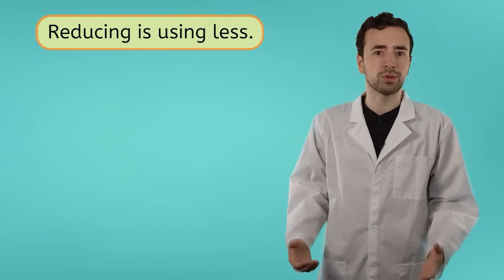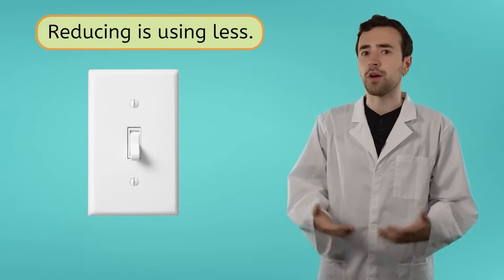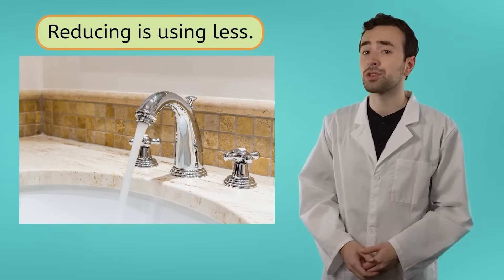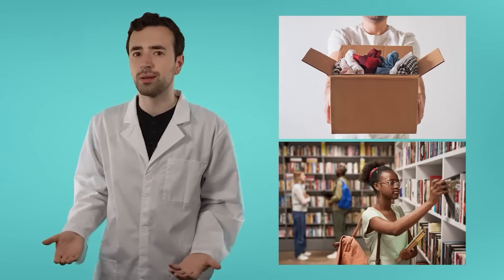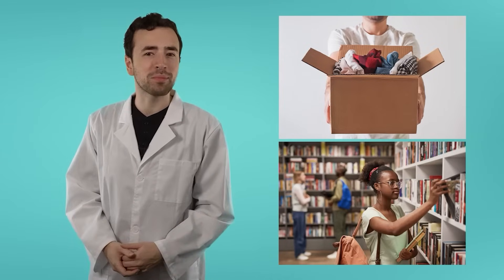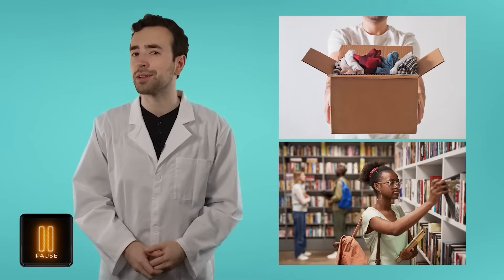Reducing can also look like just using less. Turning off the lights when leaving a room or turning off the water while brushing your teeth does a lot to conserve resources. Getting those resources to where they're going takes a lot of energy and as we know, energy production is a big cause of pollution. Reducing the resources consumed creates less pollution. Have you ever worn hand-me-down clothes or borrowed a book from the library instead of buying a new one? That's also reducing. What other ways have you reduced before? Pause the video here and record your thoughts in your guided notes.